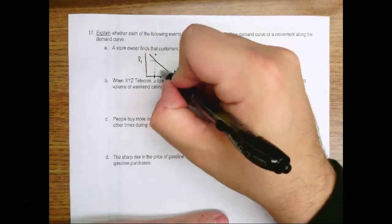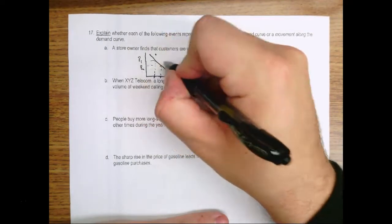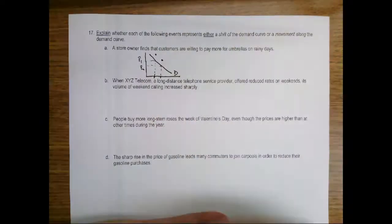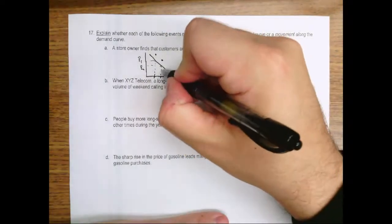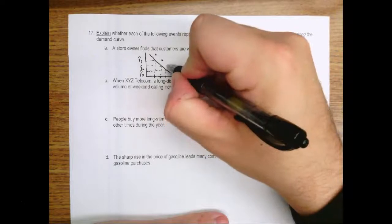And we could go down the demand curve and say instead of paying P2, people are willing to pay more. And instead of willing to pay P3, people are willing to pay more.